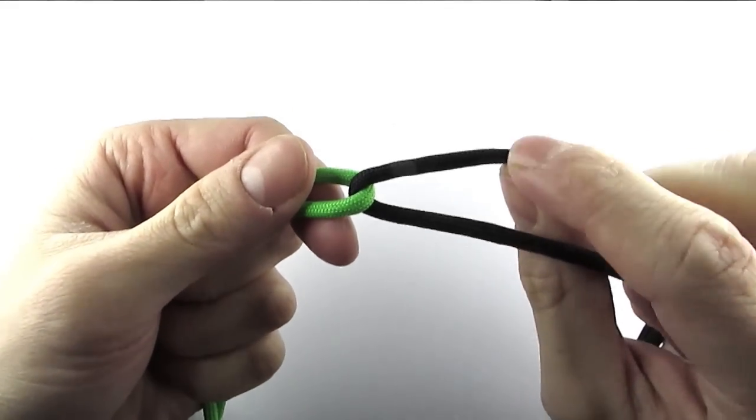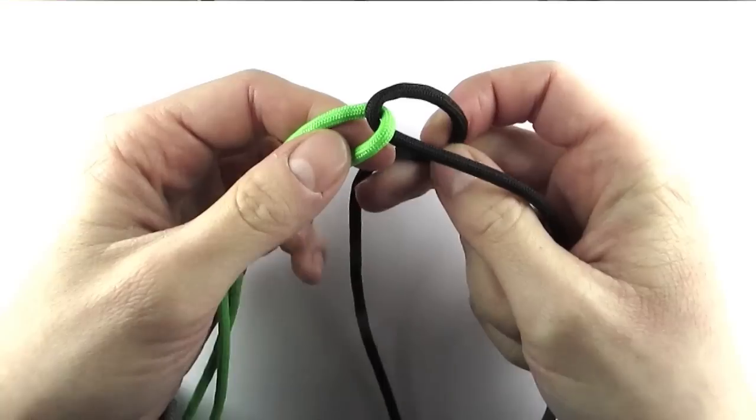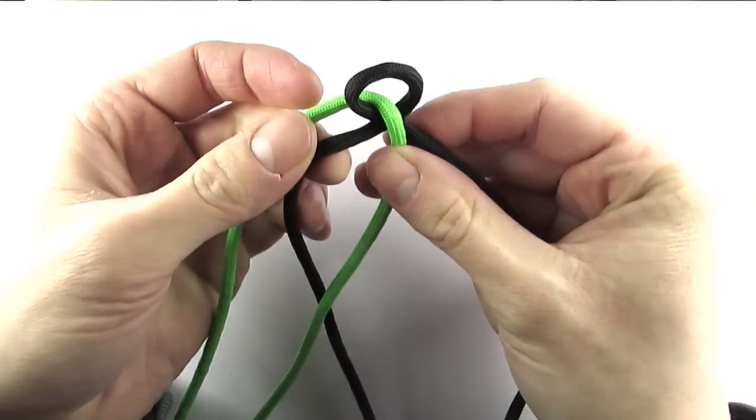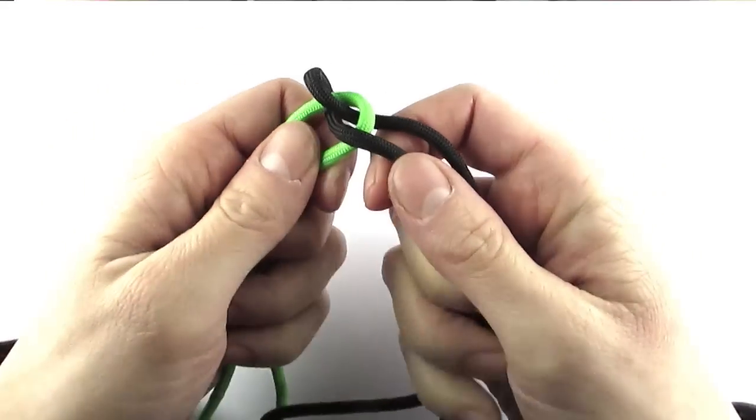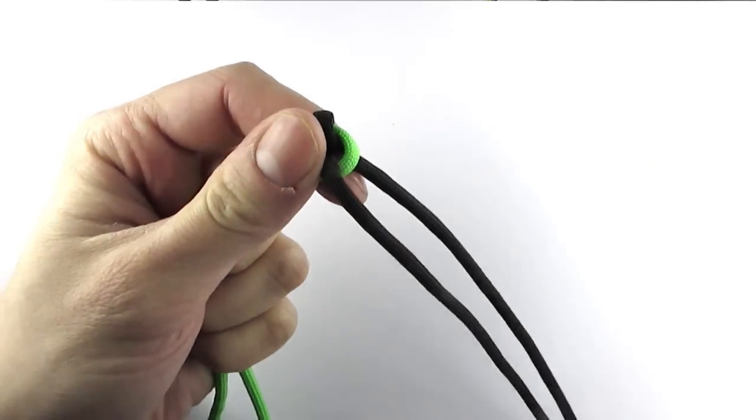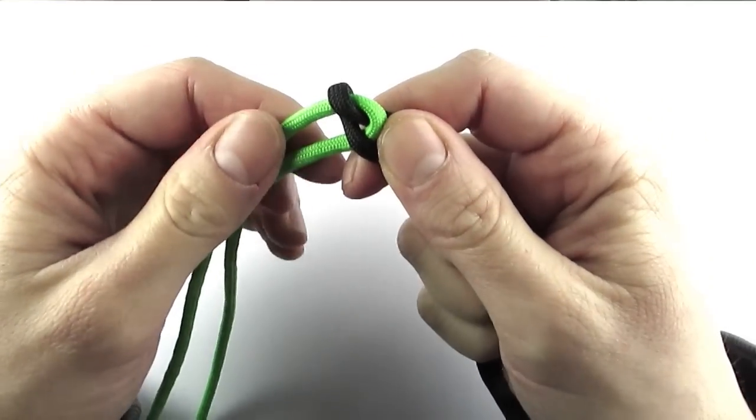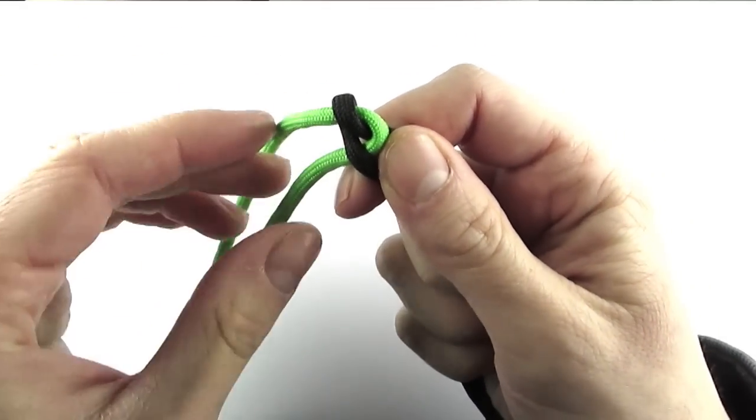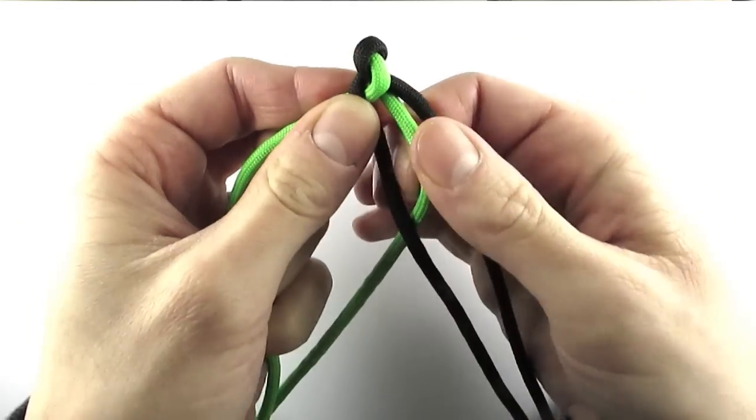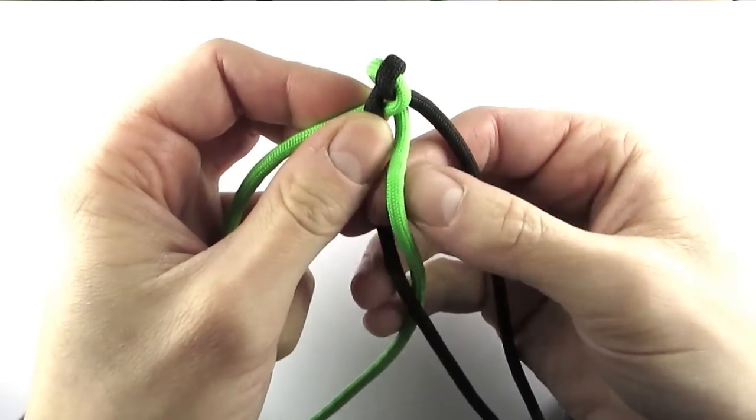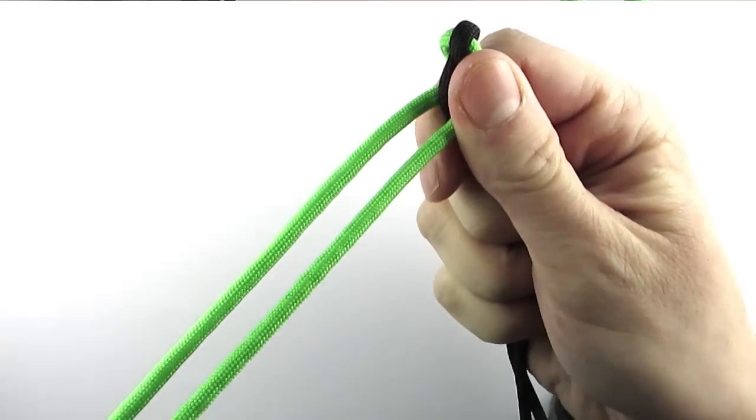We're going to take our top right cord, go behind, through the left cords and then back to the bottom of the right side. We're then going to take our left top cord, go through the back and through the right cords and then back to the bottom of the left side.